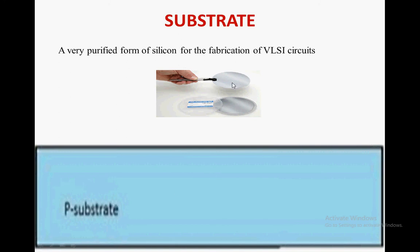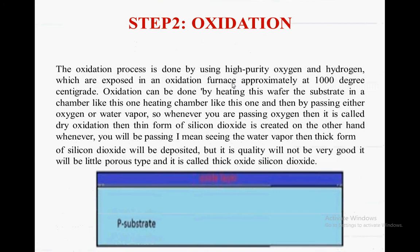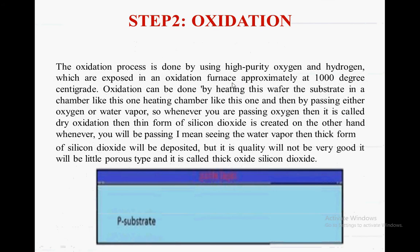Step 2 is oxidation. The oxidation process is done by using high purity oxygen and hydrogen, which are exposed in an oxidation furnace at approximately 1000 degrees centigrade. Oxidation can be done by heating the wafer from the substrate in a heating chamber.